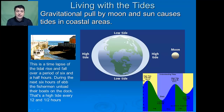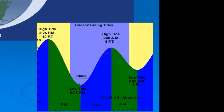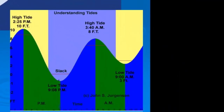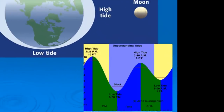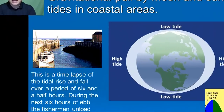Most seashores have tides four times a day — two high tides and two low tides. A change from low tide to high tide, or vice versa, takes about 6 hours and 12 minutes. As you can see in this time-lapse photo, the tide will rise and fall over a period of about 6.5 hours.